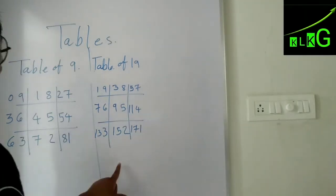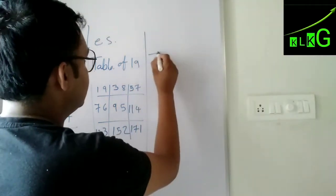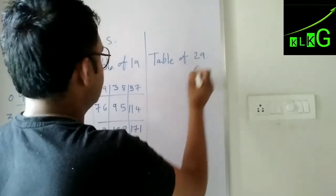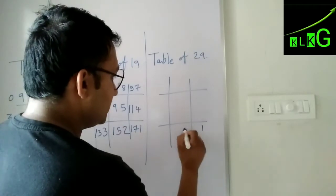So isn't it easy? Now let me show you the table of 29. The same thing is there. We'll write 1, 2, 3, 4, 5, 6, 7, 8.